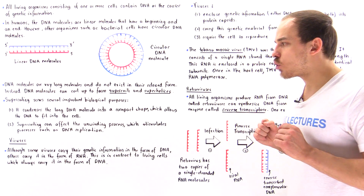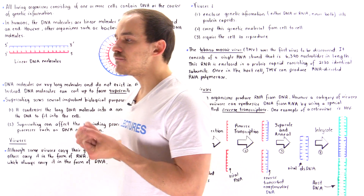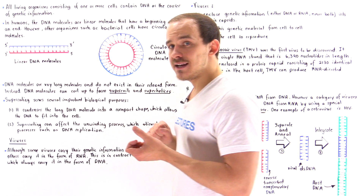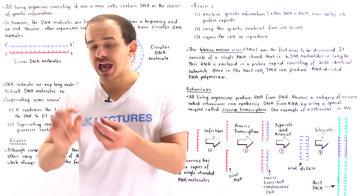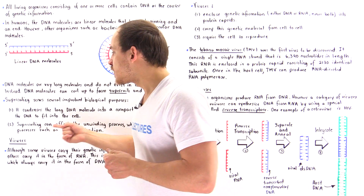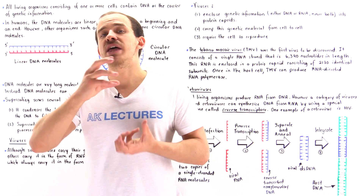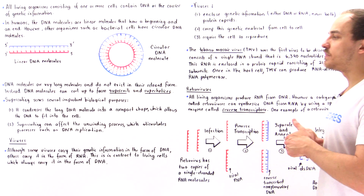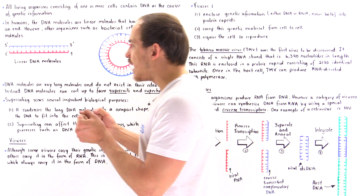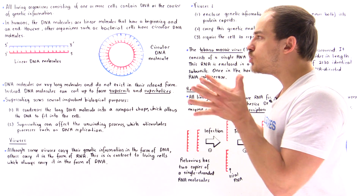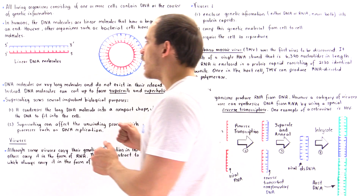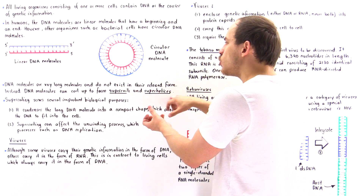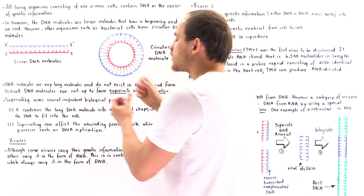The second function of supercoiling is to affect the different types of processes found inside our body. For example, when we replicate DNA inside the nucleus of the cell, we have to unwind that double helix structure, and the process of supercoiling can stabilize that unwinding process. So inside the cells of living organisms, DNA molecules don't simply exist as linear or circular forms — instead they are usually supercoiled into supercoils and superhelices that are much more condensed and compact.